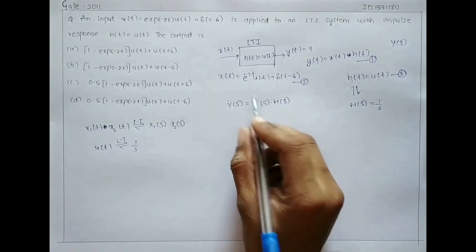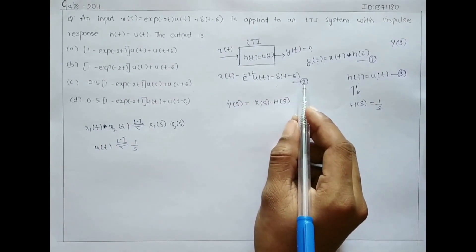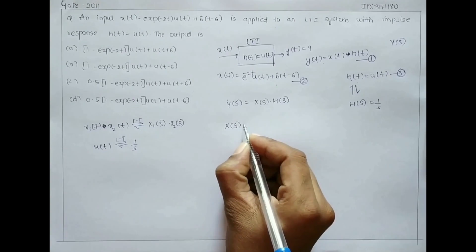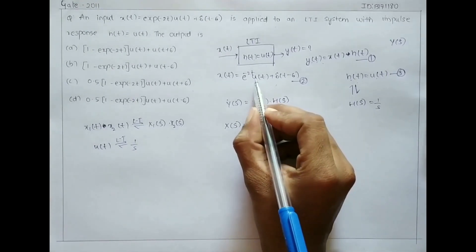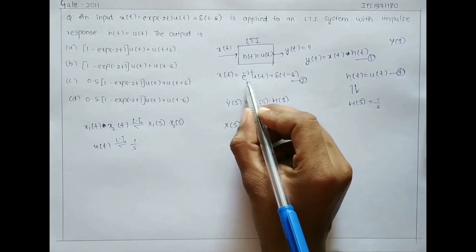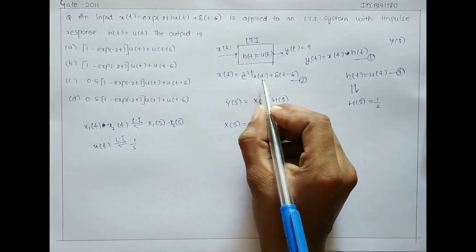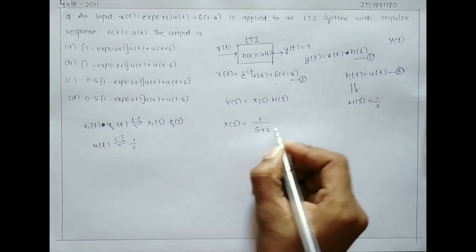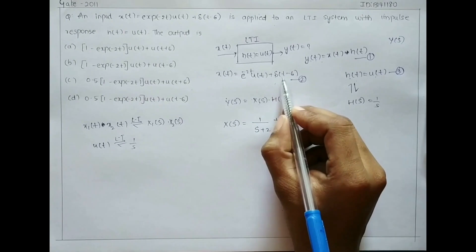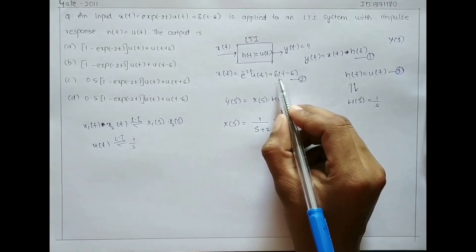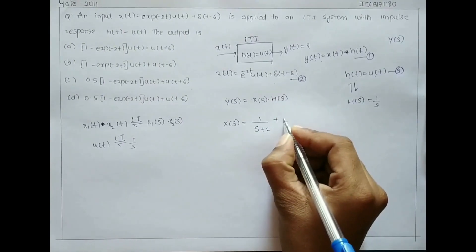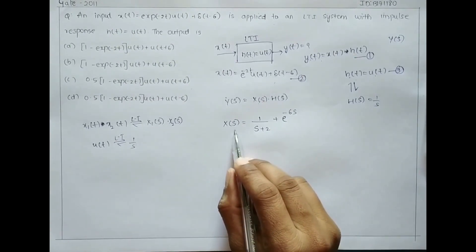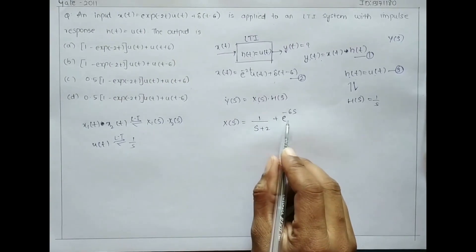Now we need to find X(s) by applying the Laplace transform to equation 2. The Laplace transform of e to the power minus 2t into u(t) is 1 by (s plus 2). The Laplace transform of delta(t minus 6) is e to the power minus 6s. So X(s) equals 1 by (s plus 2) plus e to the power minus 6s.